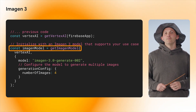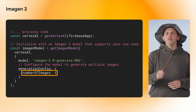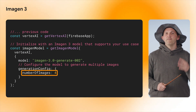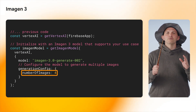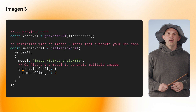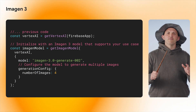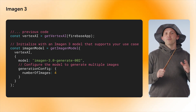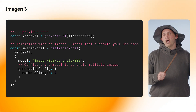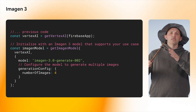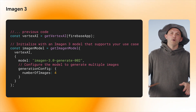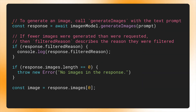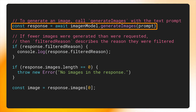And since I want to give my users a choice, I tell the model to generate four images, so my users have some options to pick from. There are lots of other configurations I could set for the model here too, like aspect ratio and things I explicitly do not want in the generated images. Now I would just make a request to the configured Imagen model using a call to generateImages and then await a response from the service.